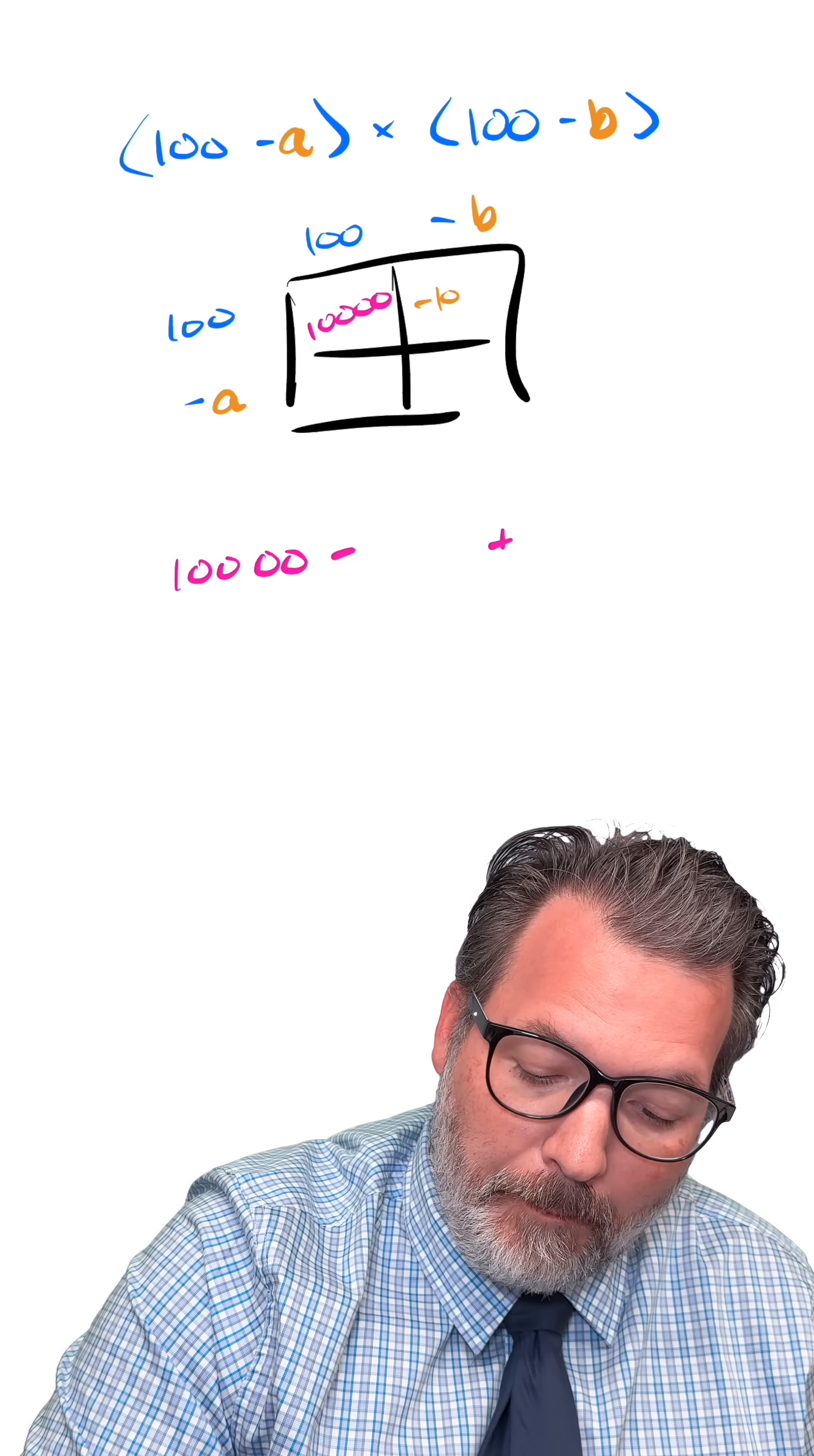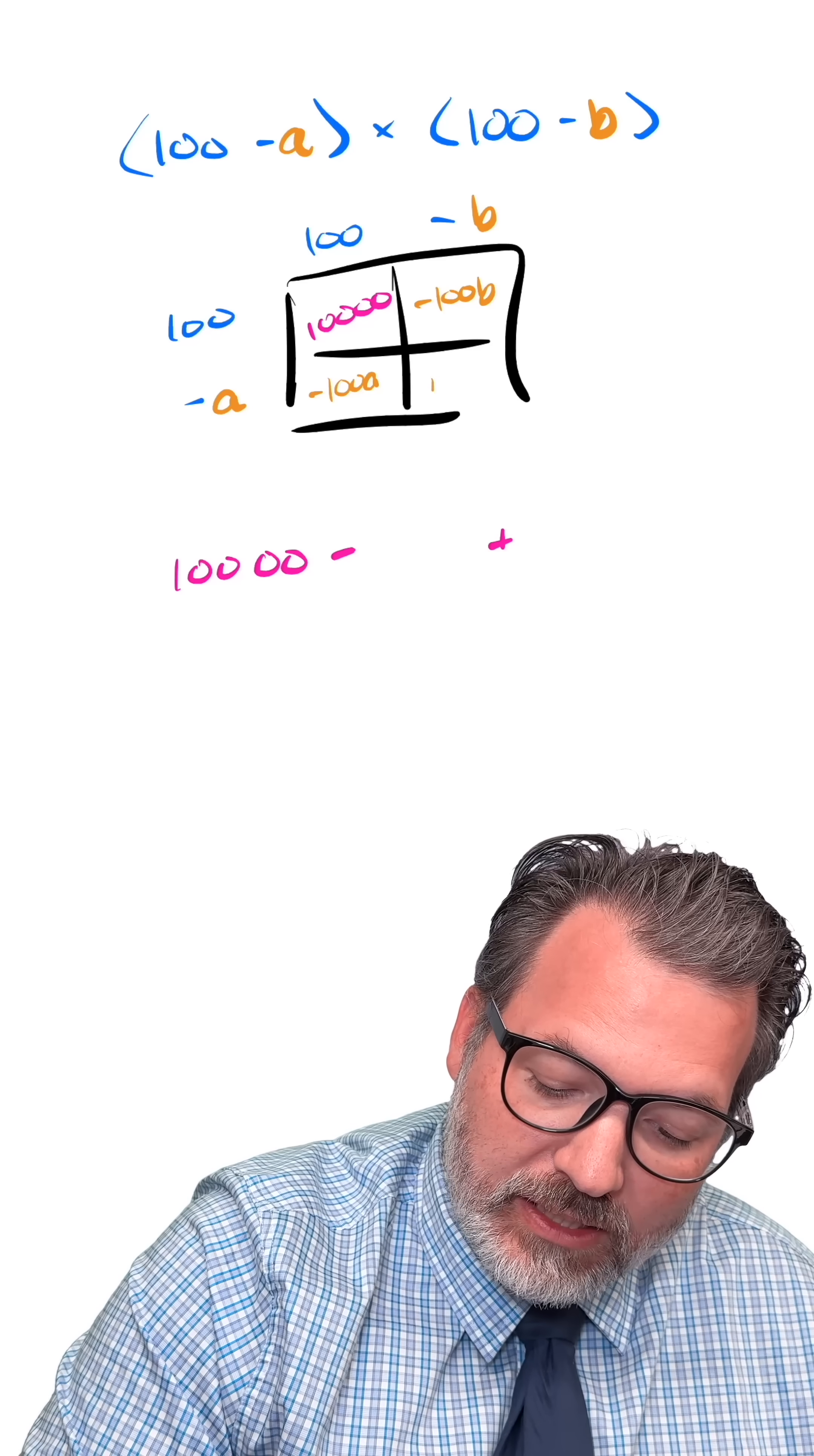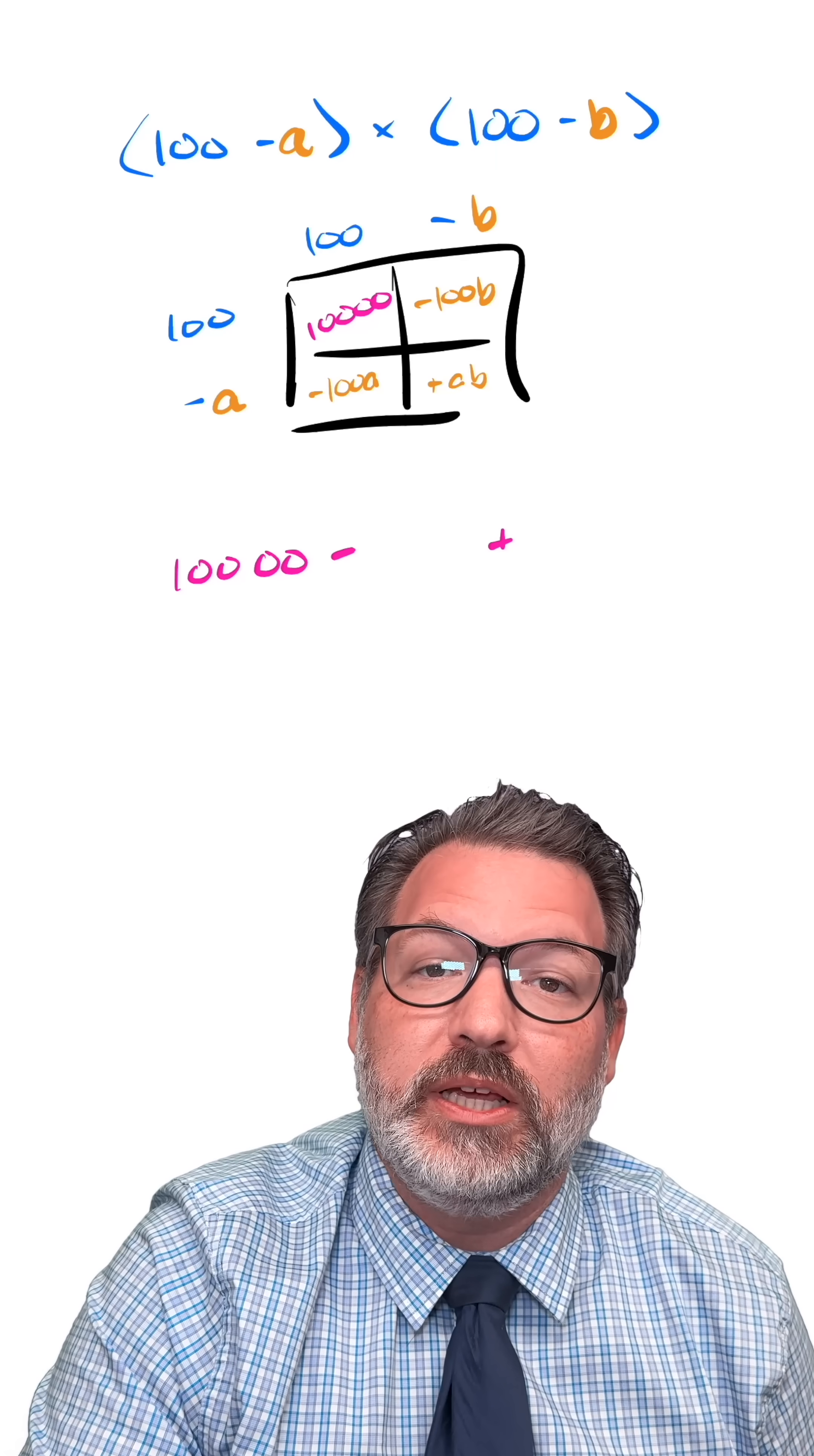we're still going to get a minus 100B, still going to get a minus 100A, and still going to get a plus AB, which, as long as A and B are single digits, is going to be some two-digit product.